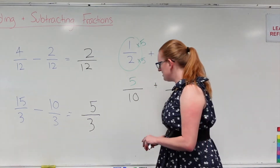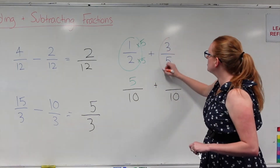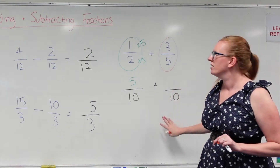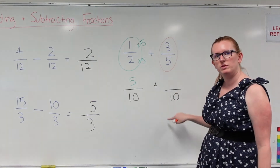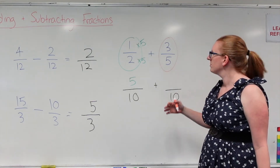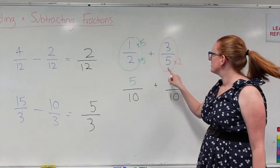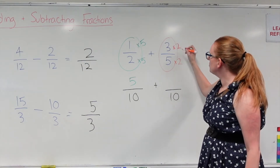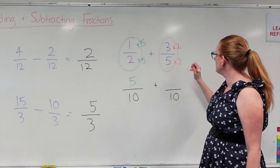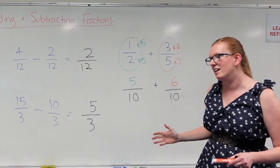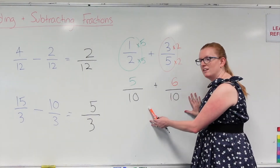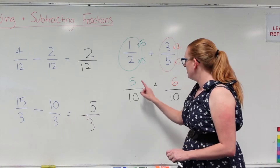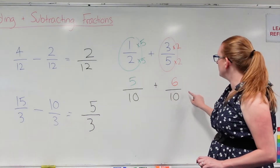Now let's do this one. I want to turn this fraction into one that has a denominator of 10 as well. So how do I turn a 5 into a 10? I have to multiply it by 2. So 5 times 2 gives me 10. But if I'm multiplying the bottom by 2, I also have to multiply the top by 2. So 3 times 2 is 6. Now my new fractions both have matching denominators, so I can add them now. So I've got 5 over 10 plus 6 over 10.